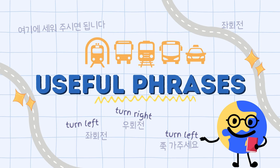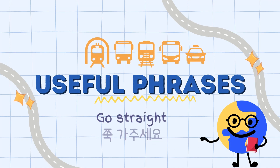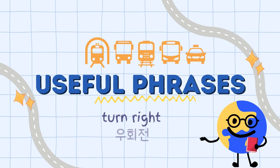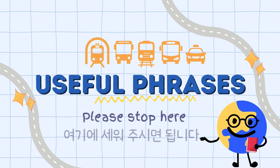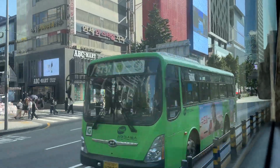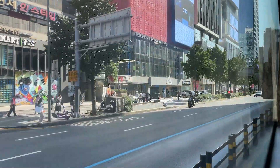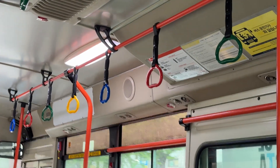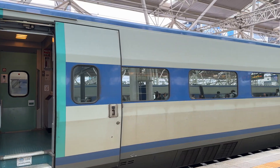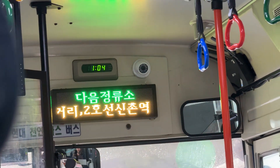Here are some useful Korean phrases for taxis: 쭉 가주세요 (go straight), 우회전 (turn right), 좌회전 (turn left), and 여기서 세워주세요 (please stop here). We hope this video helps you get around Korea using the public transportation system. There are so many things to do in Korea, so utilize the public transportation and go explore this beautiful country.